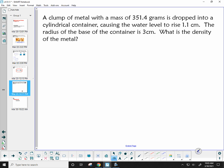The cube of metal with a mass of 351.4 grams is dropped into a cylindrical container, causing the water level to rise 1.1 centimeters. The radius of the base of the container is 3 centimeters. We're going to find the density of the metal.